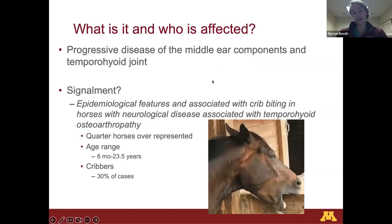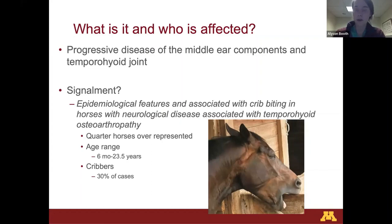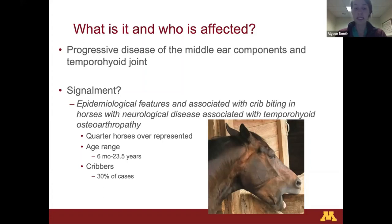So what is THO and who does it affect? Back in the day it was believed to be mostly a progressive disease of the middle ear, though the ear is still a very important part of this disease. No particular breed is predisposed, but we do see quarter horses overrepresented — most likely because in America we have more quarter horses, and a lot of studies have been done here. Studies in Europe mostly involve warmbloods since quarter horses aren't as prevalent over there.